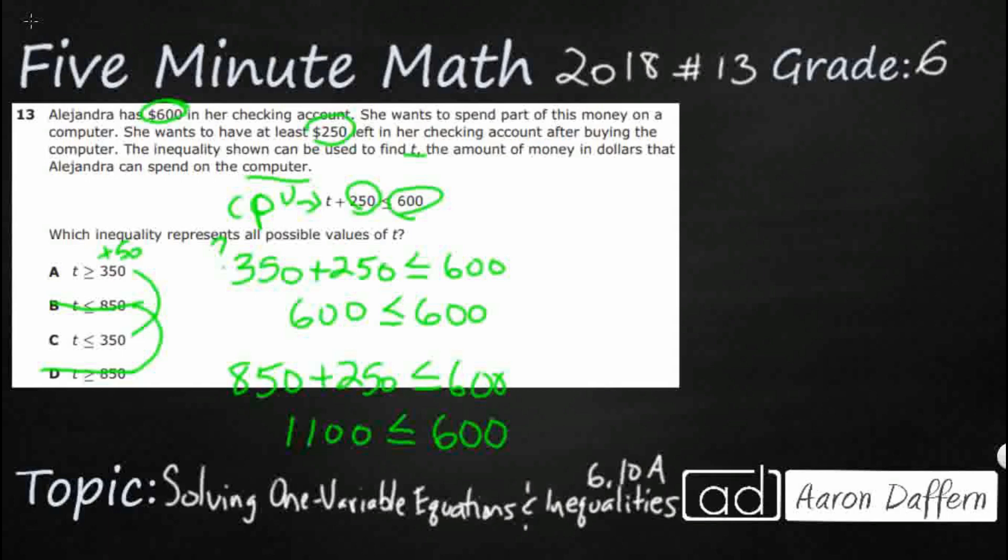So I'm going to make it $400. So $400 plus $250 is less than or equal to $600. Look what we get there. We get $650 is less than or equal to $600. That is not going to work.